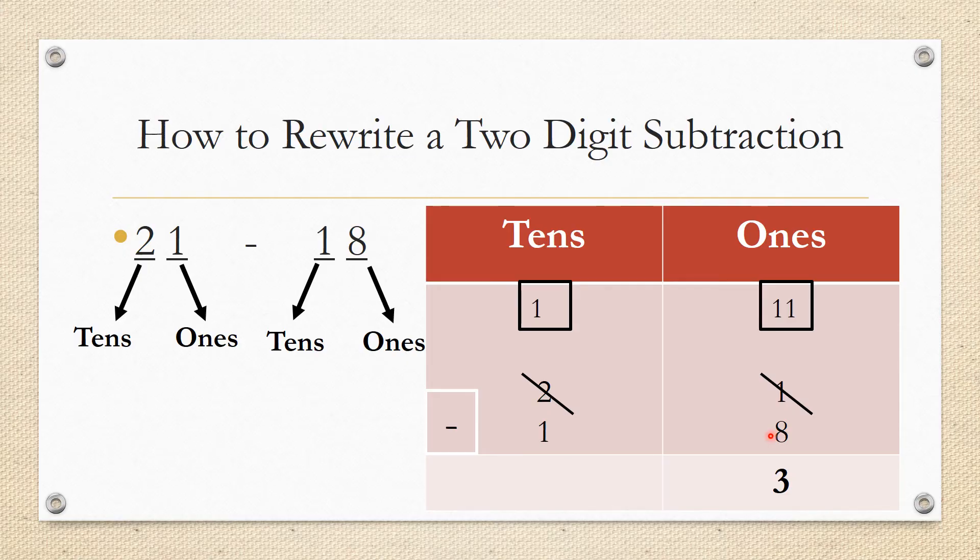So how do I regroup? I will look at my neighbor. I will take 1 from my neighbor, so if I take 1 from the 2 it will be 1, and I will give this 1 to the 1, so it will be 11.